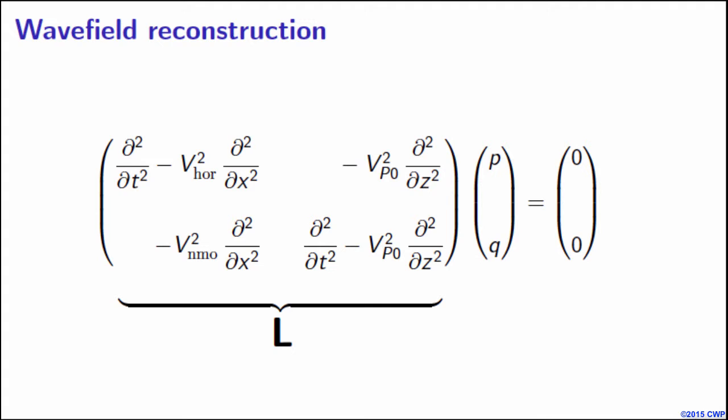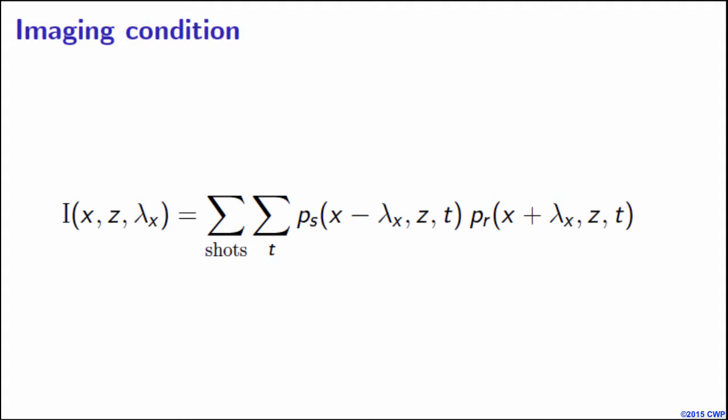The next step is imaging condition. We define our image as the lagged correlation between P components of source and receiver wavefields. The reason we do not use Q components is because in terms of P wave kinematics it does not bring any additional information. We also restrict our attention to only horizontal space lags, denoted by lambda_x.